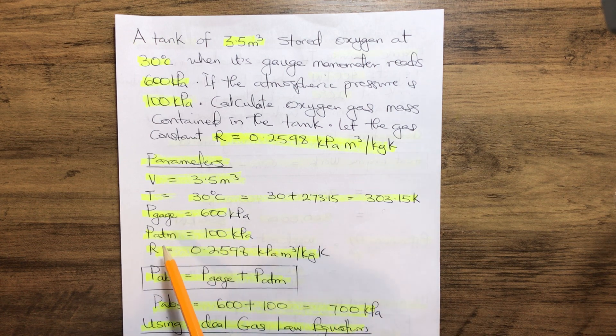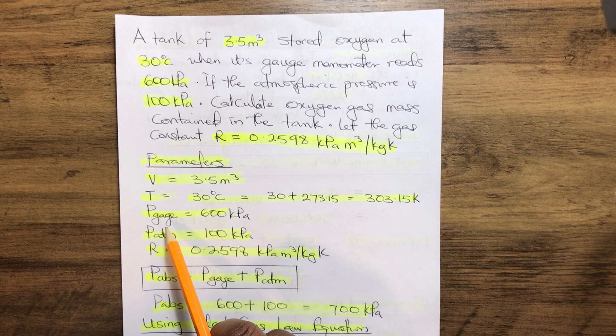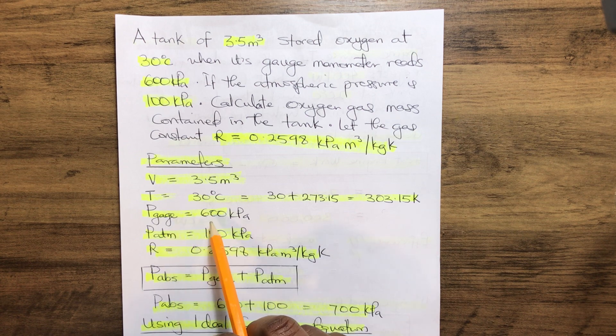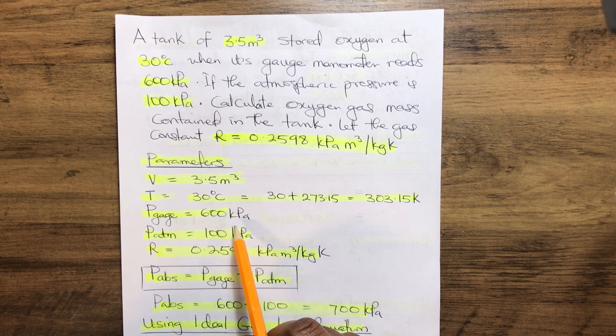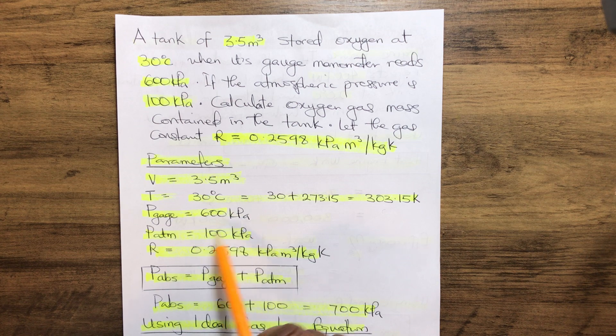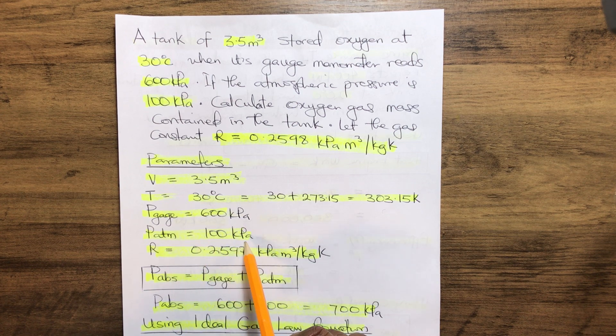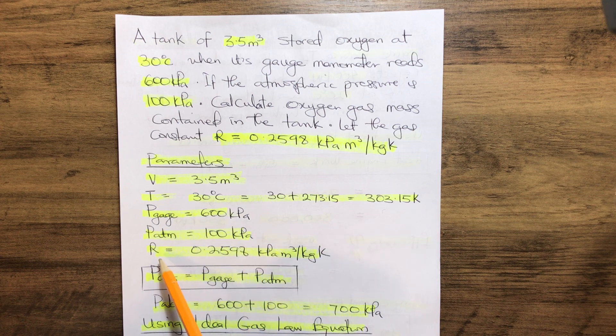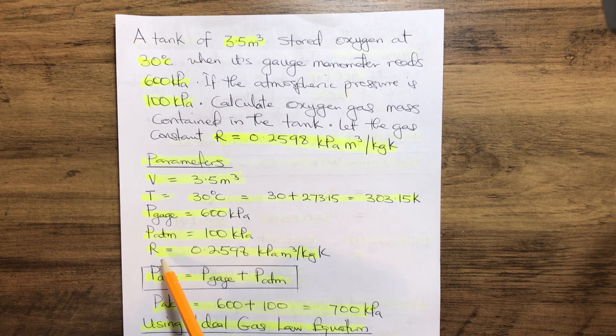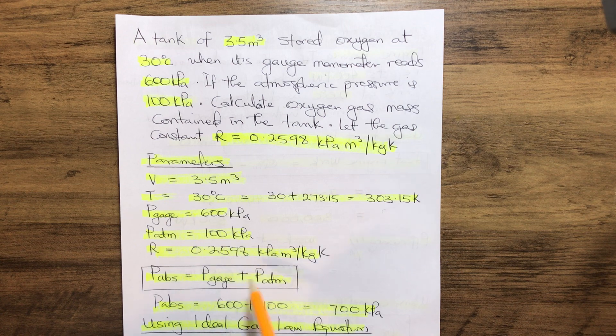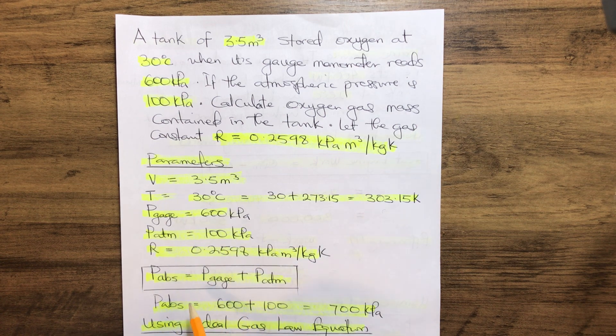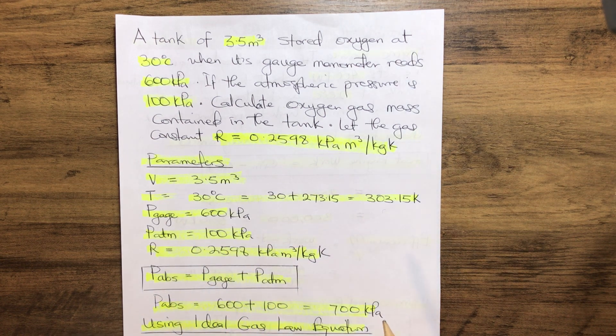We have gauge pressure P_gauge = 600 kPa. We have atmospheric pressure P_atm = 100 kPa, and we have the gas constant for oxygen R = 0.2598. Now first of all...